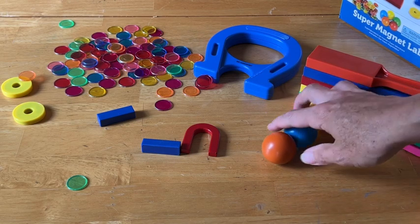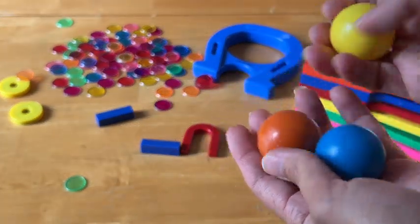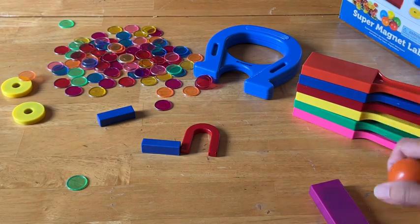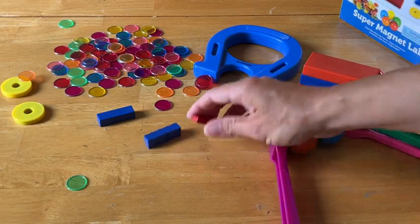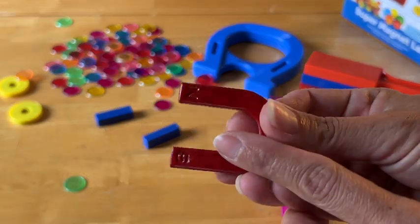It actually comes with five balls; they are magnetic on the inside, and we've lost two of them along the way. It also comes with two of these small horseshoe magnets that have north and south pole written on there. Like I said, we've lost one of those along the way.